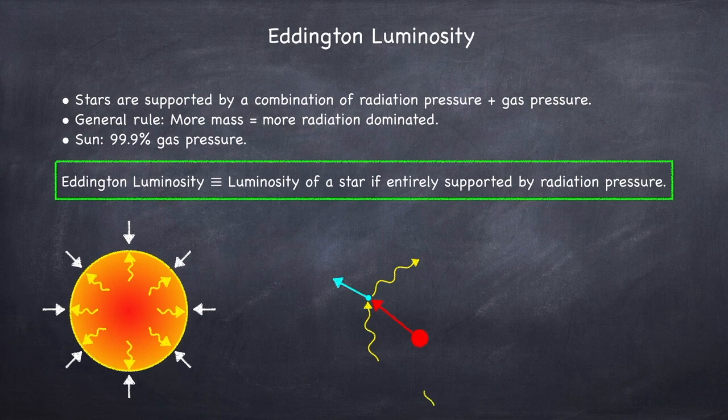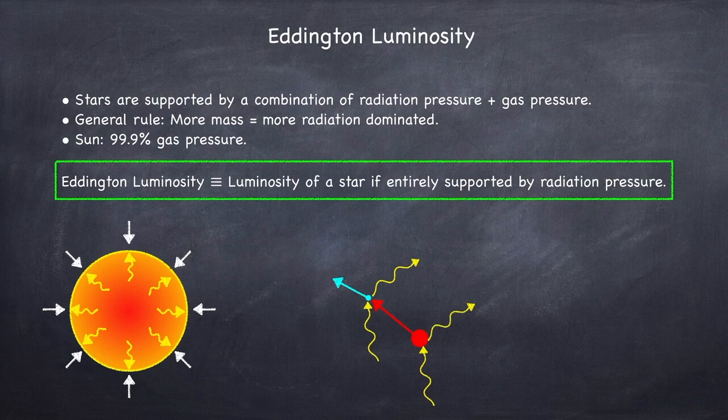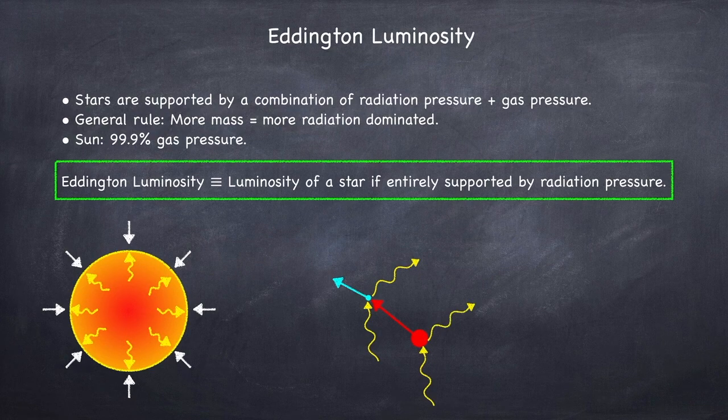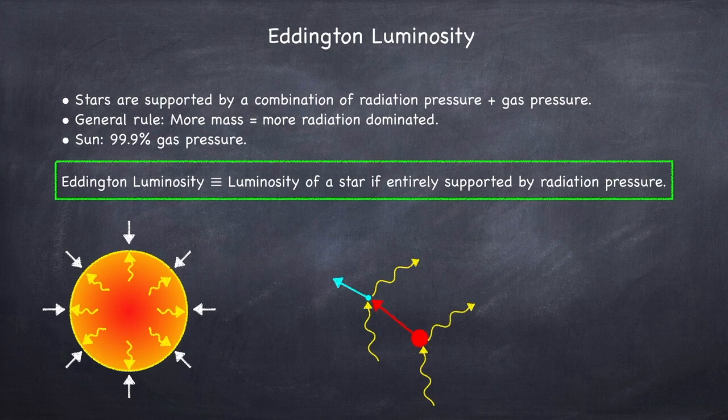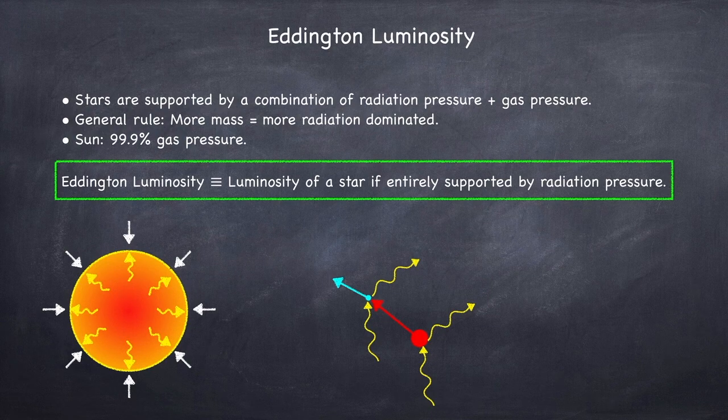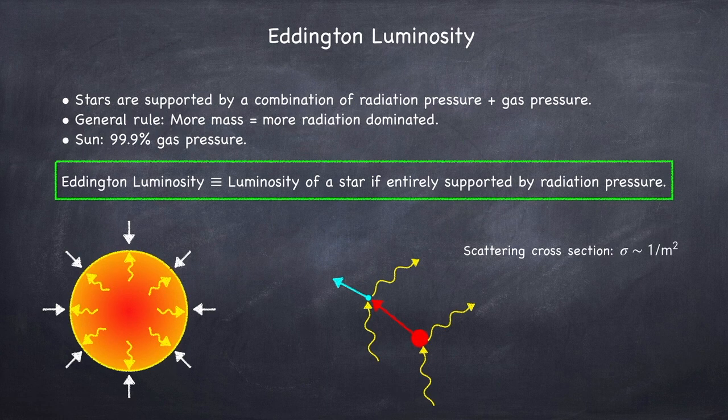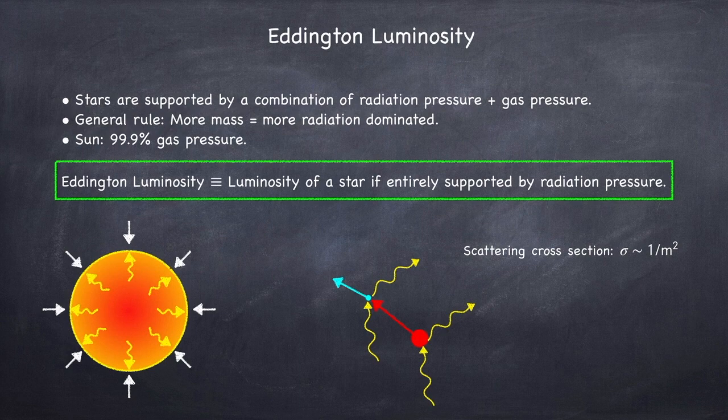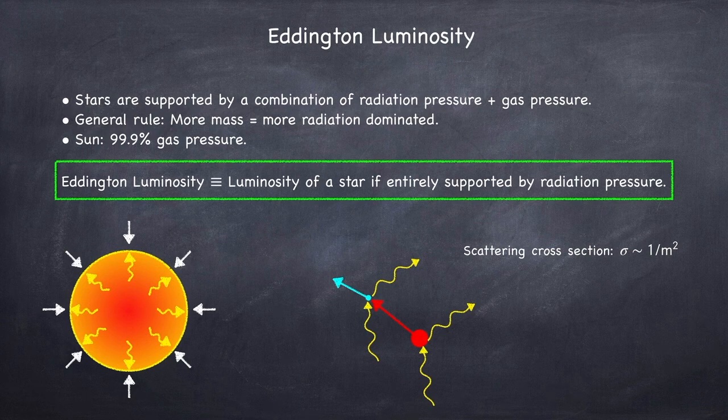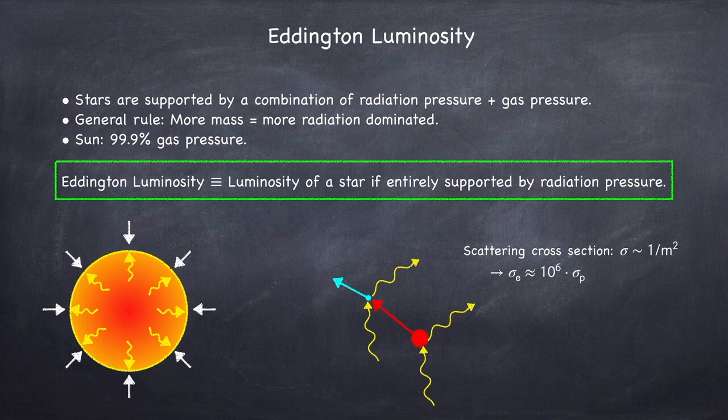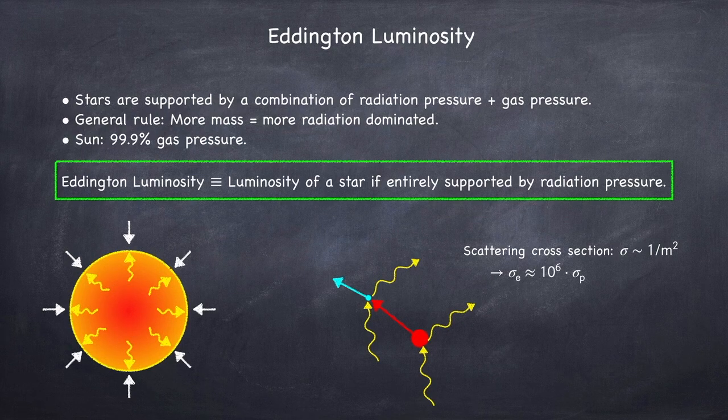You may be wondering, why doesn't the photon just scatter off the proton and impart its momentum onto it directly? In principle, yes, this can happen. However, the scattering cross-section for this interaction is proportional to one over the mass squared, and an electron is about a thousand times lighter than a proton, so the scattering cross-section for the electron is about a million times greater than for the proton.